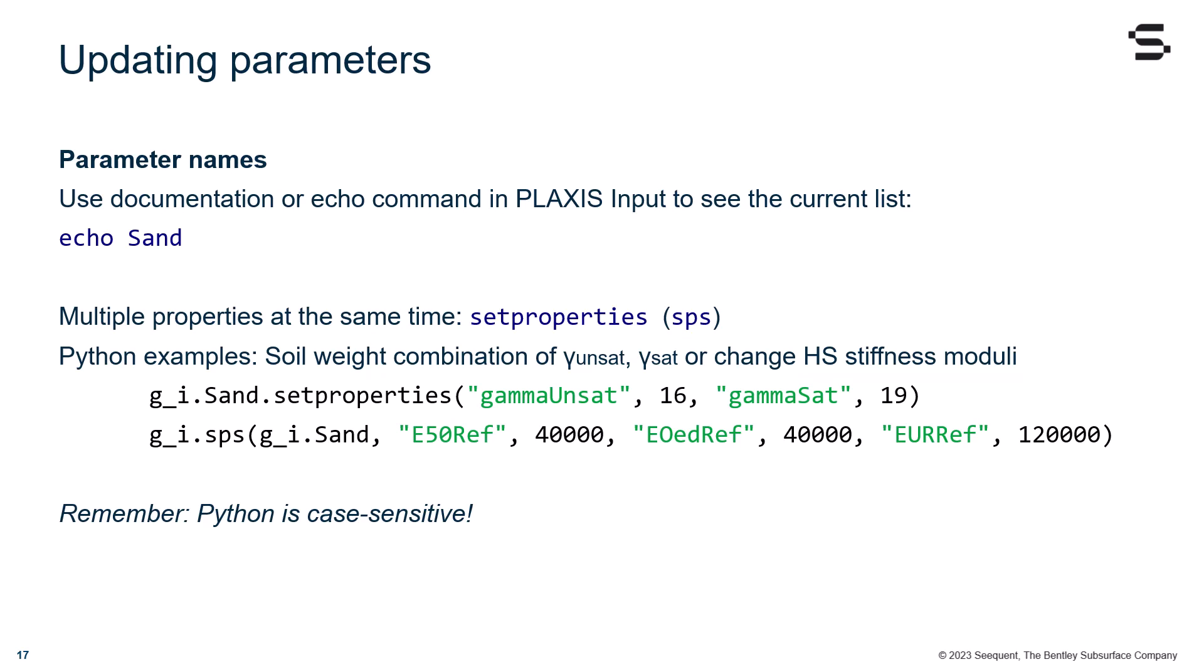The first would be g_i.Sand.setproperties, gammaUnsat 16, gammaSat 19, and the second g_i.sps, g_i.Sand,